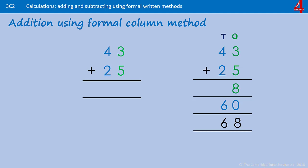Starting with 43 add 25. We add each column at a time — we always start with the smallest value column, and here that is the ones. 3 add 5 is 8, so we put the 8 beneath the 3 and 5 in the ones column. Now we are adding the tens. Remember with the partitioning method we were adding 40 and 20 to make 60. When we move on to these more efficient methods it is fine to just say 4 add 2 — we have 4 tens and 2 tens and that is 6 tens. That makes this 68. You can see how that links to the partitioning method — we have added on 60, but because there is already 8 in the ones column it comes to 68.